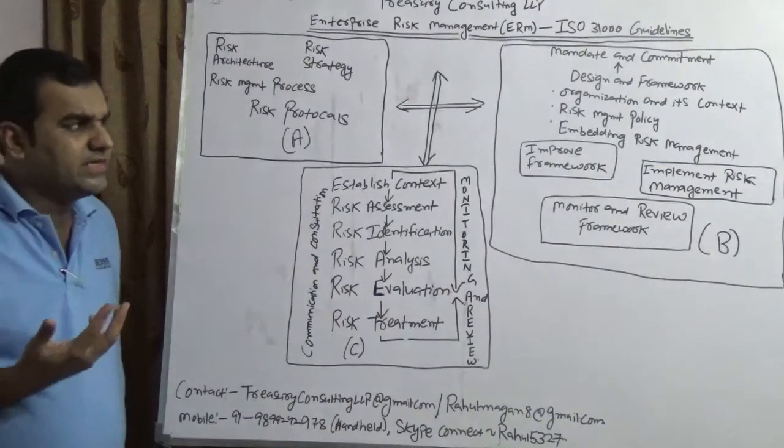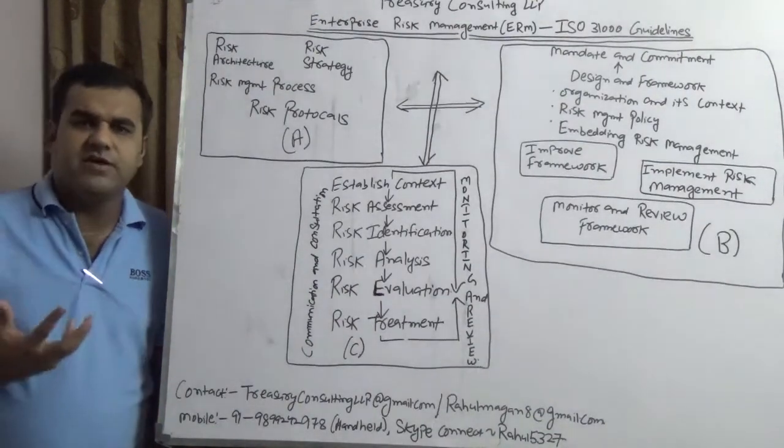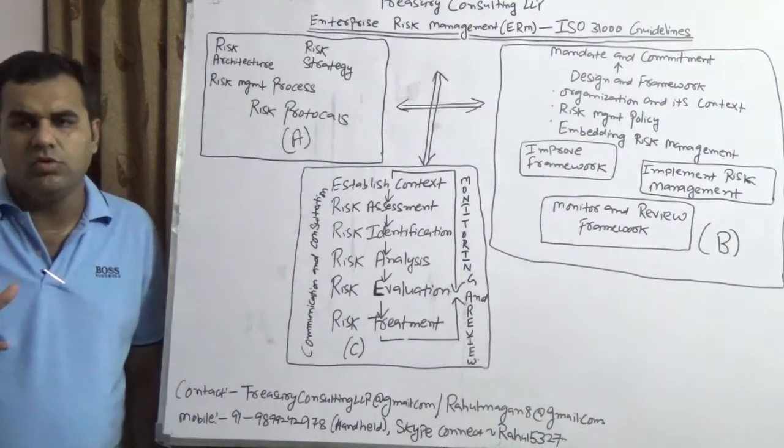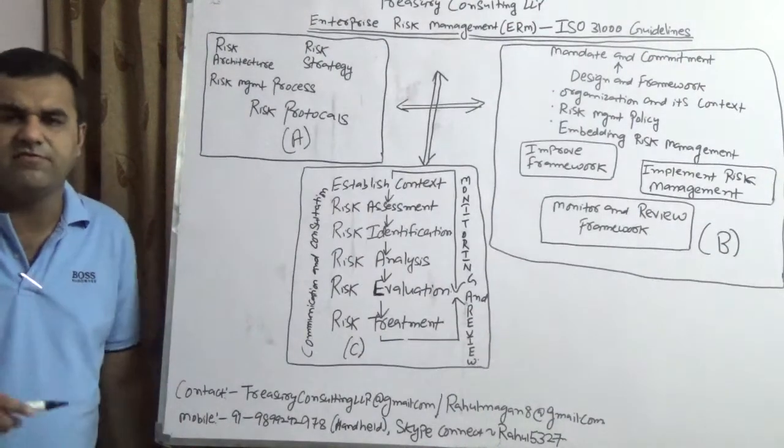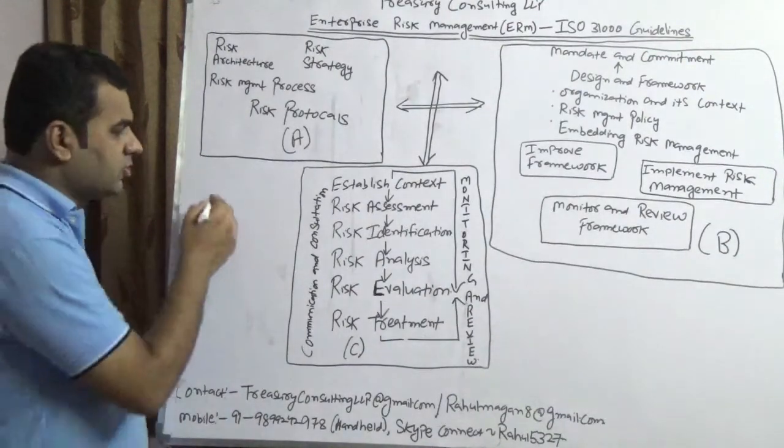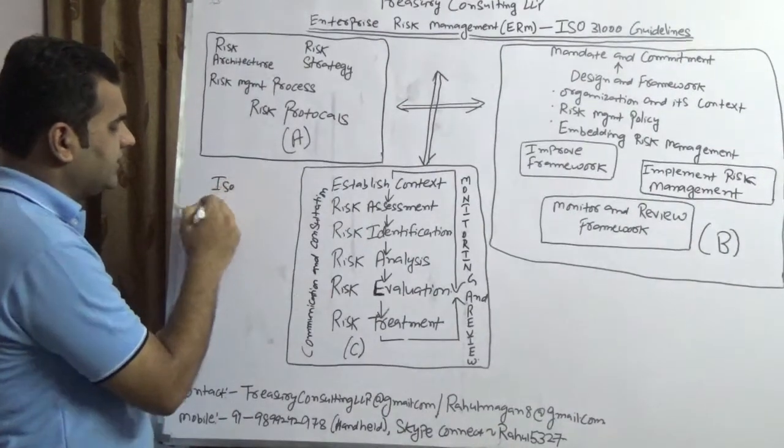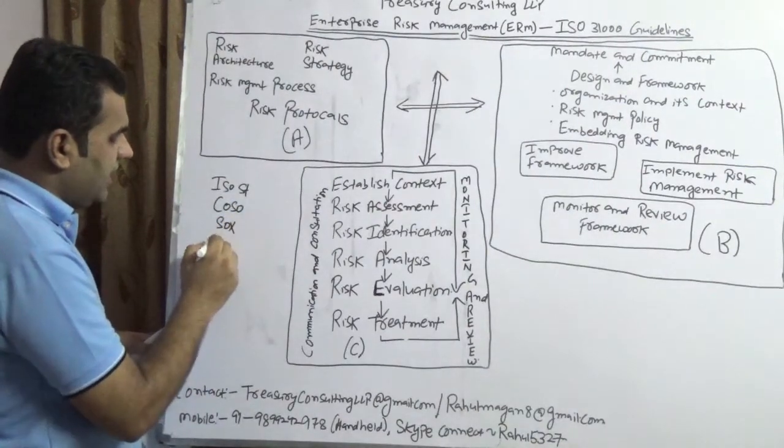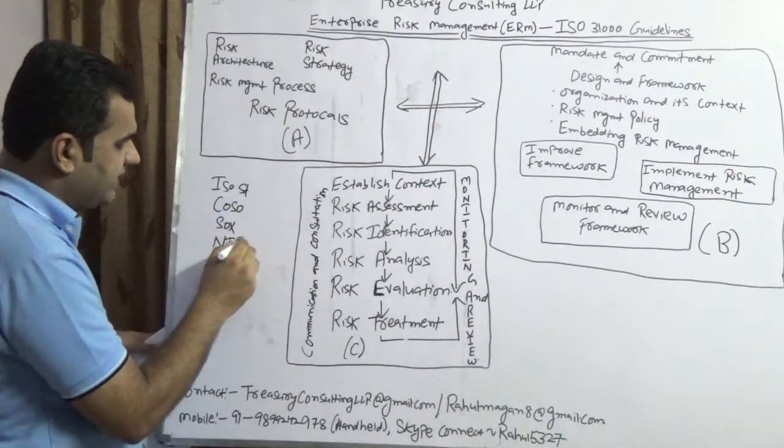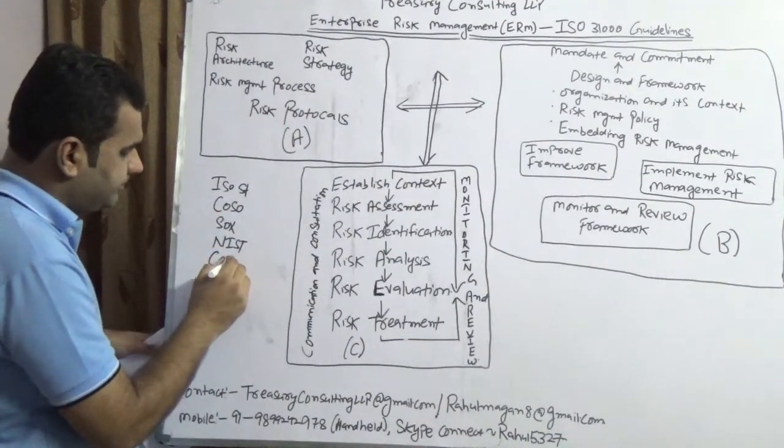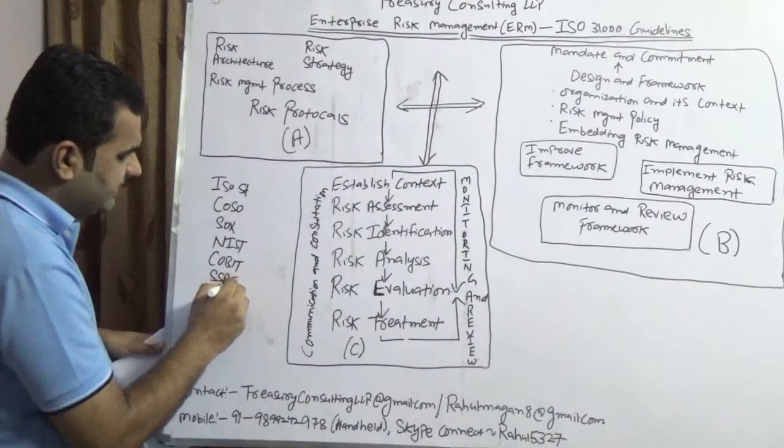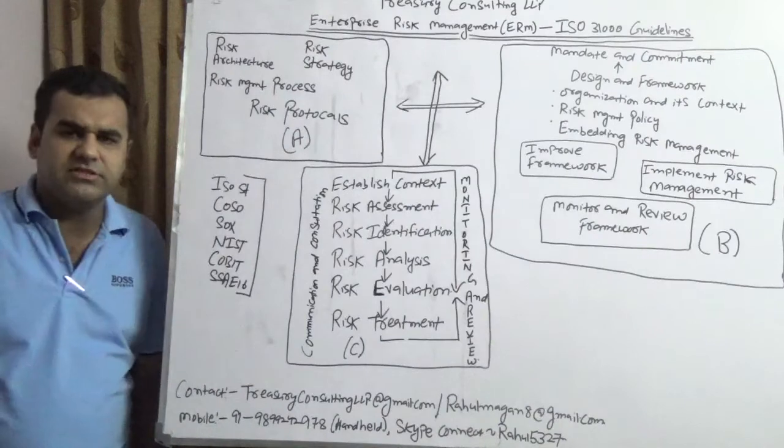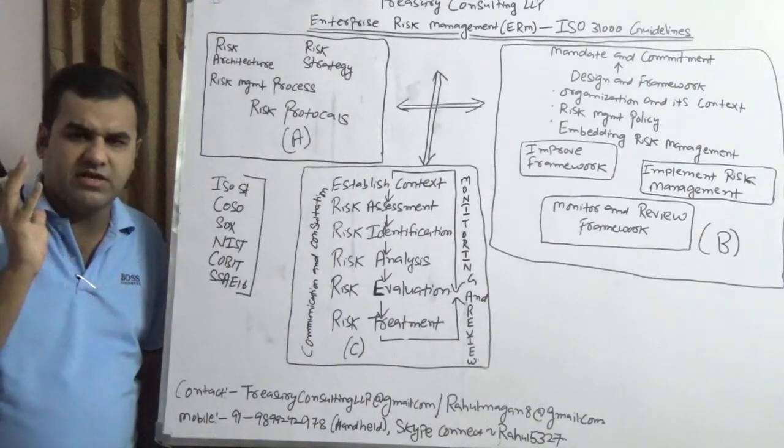For this, ISO standards play a very important role. However, there is a tendency in the market that these ISO standards standalone will save you from all kinds of risk. No, this is not the case. These ISO standards will save you if you have other frameworks also. You have ISO standards, you would have COSO, you would have SOX, for IT you would have NIST, COBIT, and SSE 16.